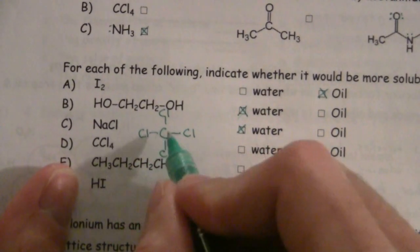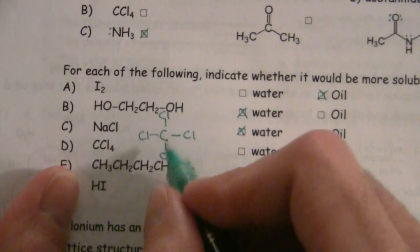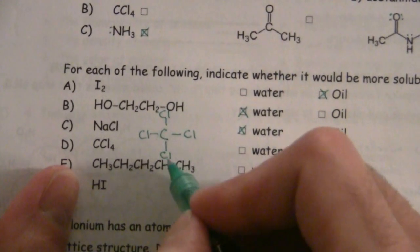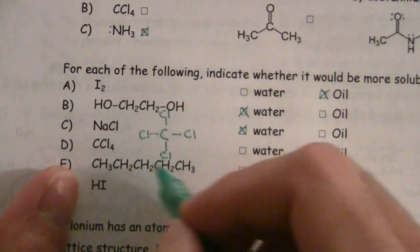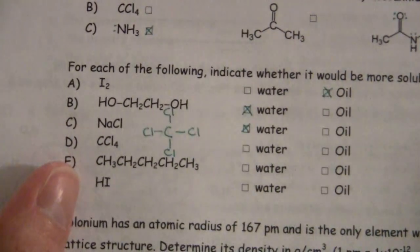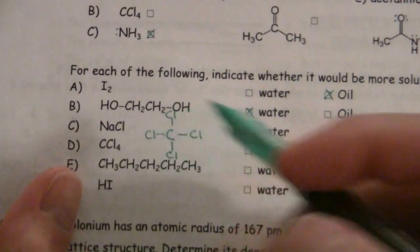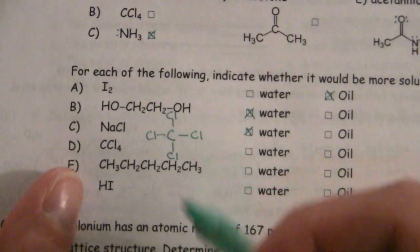In other words, they're on opposite sides. And so, the net polarity for the entire molecule is zero. Everything cancels itself out because it's completely symmetric.